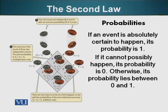In order to understand some of these genetic events, we also should have some understanding of probability. If we flip a coin, what is the probability we will get a head or a tail? It's 50%. 50% of the time we will get heads, 50% of the time we will get a tail.